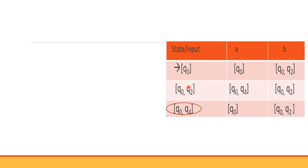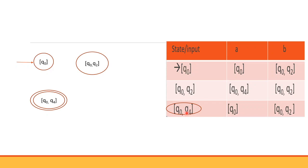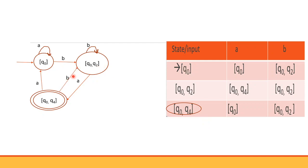The DFA states are: {q0}, {q0, q2}, and {q0, q4}. For {q0} on a: q0; on b: {q0, q2}. For {q0, q2} on a: {q0, q1, q2}; on b: {q0, q2, q4}. For {q0, q4} on a and on b: {q0, q2}. This completes the transition table entries.